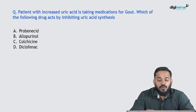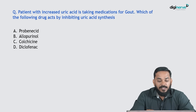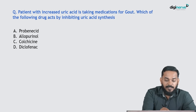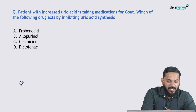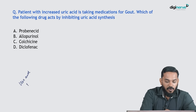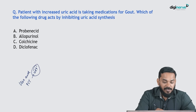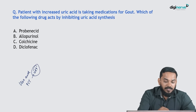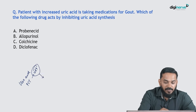Next question: a patient with increased uric acid is taking medications for gout — which of the following drugs acts by inhibiting uric acid synthesis? Option A is probenecid. Uric acid reabsorption occurs in the proximal convoluted tubule with the help of a uric acid transporter, and uric acid is reabsorbed in exchange for lactate.